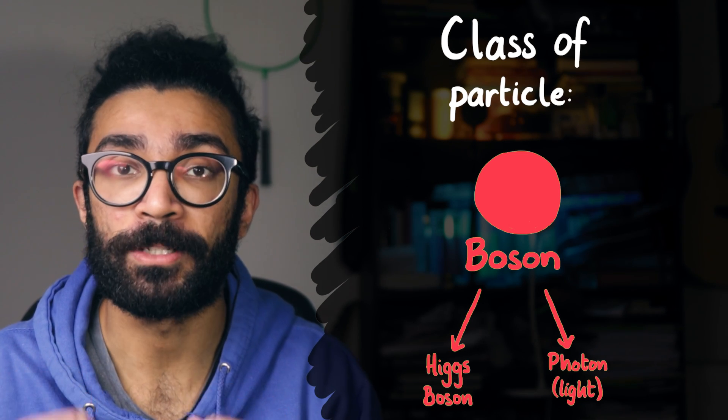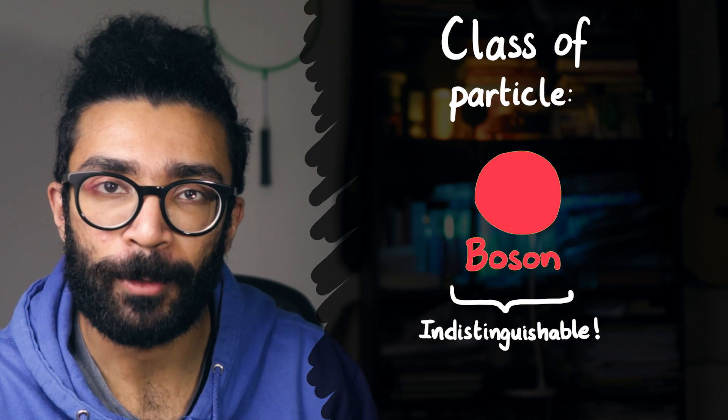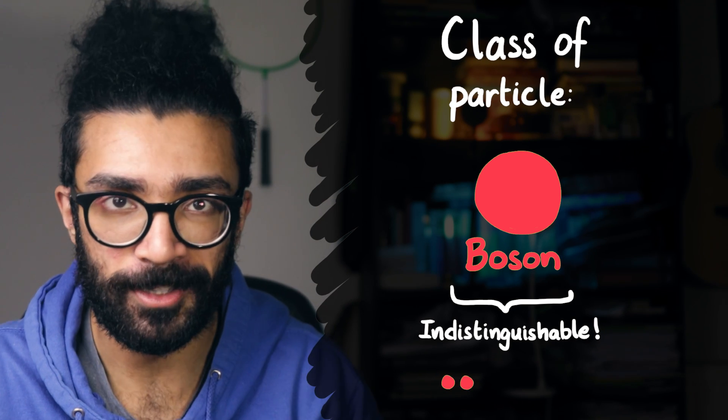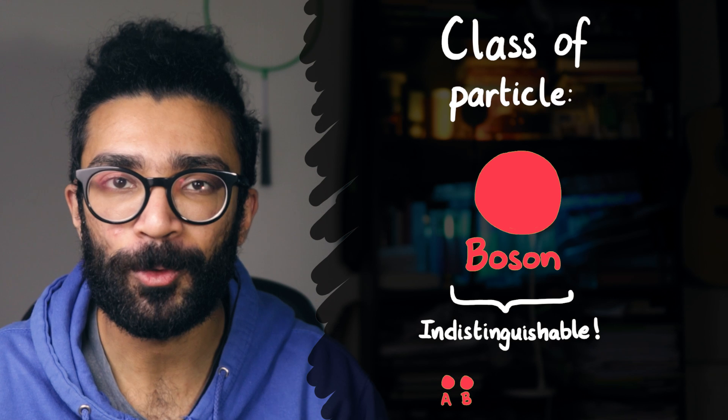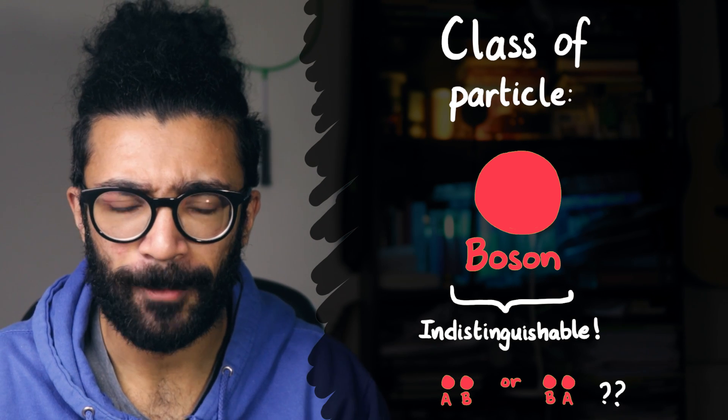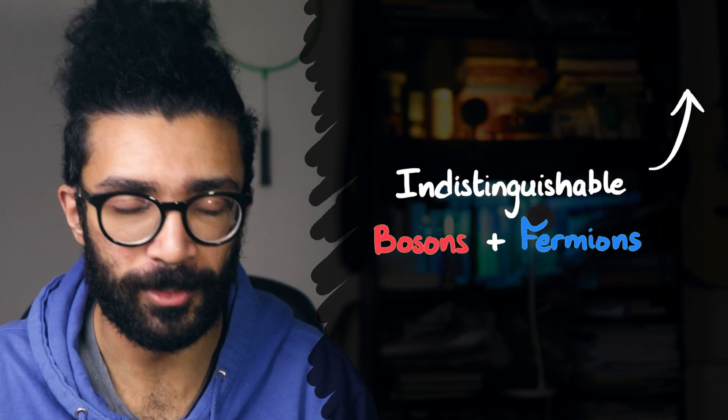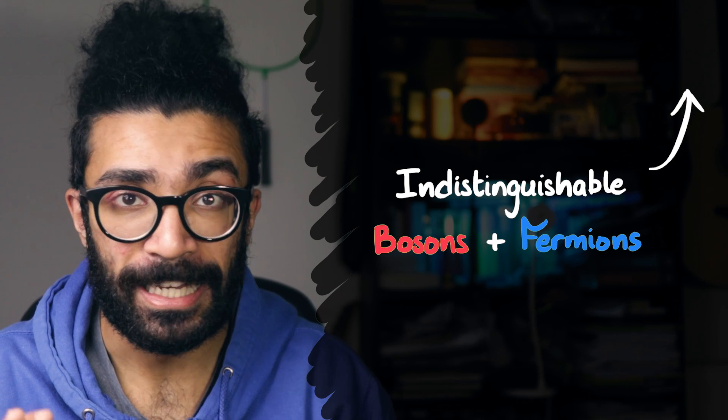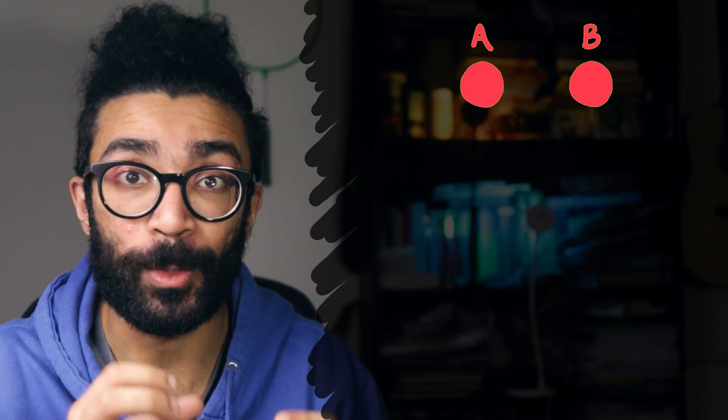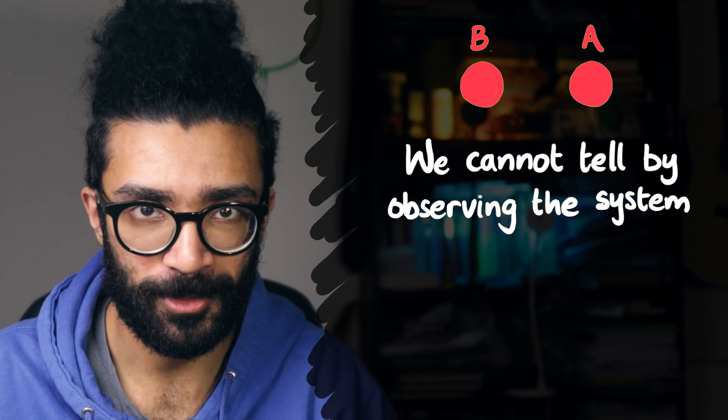Well, the first thing is that they are a particular type of indistinguishable particle. That means, if we have two of the same kinds of boson in a particular system, we have absolutely no way of telling apart the two particles. Now, this is a bit of a wacky idea, and I've made a video covering indistinguishable particles, specifically looking at bosons and fermions, so check it out up here if you haven't seen it already. But the fact that bosons are indistinguishable particles, that is, if we have two of the same kind of bosons we can't tell which is which, has a very important impact on the behaviour of these bosons.